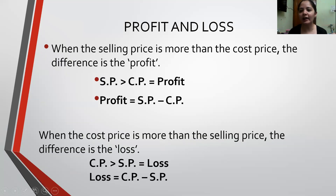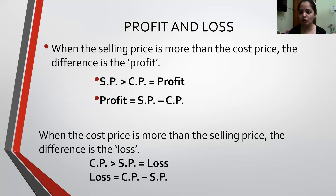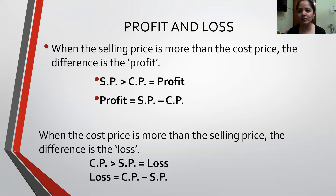How do we find whether it is Profit or Loss? We compare the Selling Price and the Cost Price. If Selling Price is more than the Cost Price, the difference is Profit. If the Cost Price is more and Selling Price is less, then it is Loss. The amount of Profit is Selling Price minus Cost Price, and the Loss is Cost Price minus Selling Price.